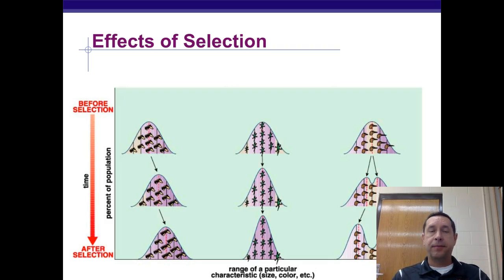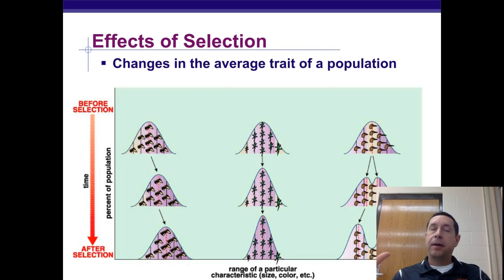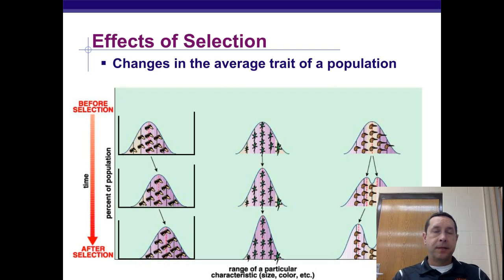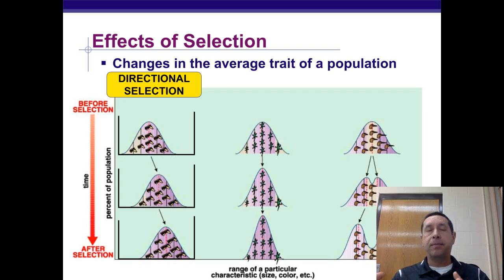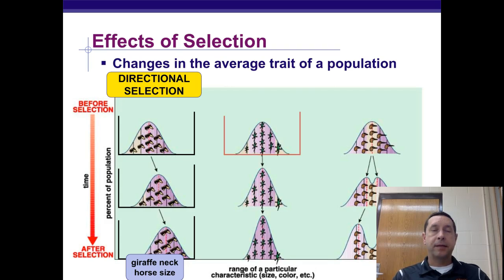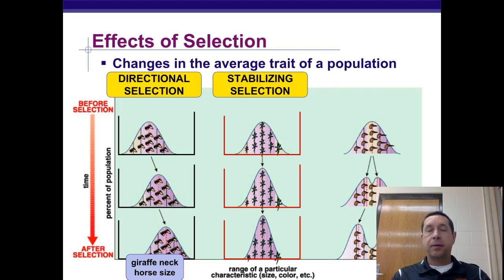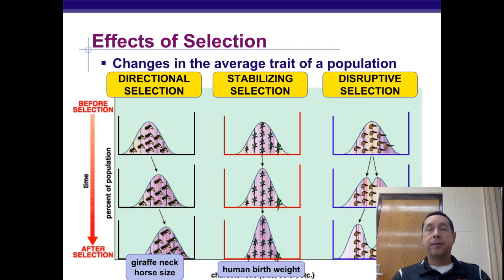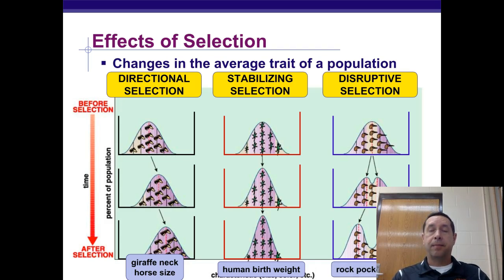How does selection affect populations specifically? In all cases, selection changes the average trait of the population. Directional selection is when the whole distribution shifts one way or the other without changing shape — giraffe neck length is an example. Stabilizing selection results in more individuals having the most common phenotype, narrowing the distribution — human birth weight is an example. Disruptive selection favors both extremes over the most common phenotype, producing a bimodal distribution with two peaks, such as in rock pocket mice.